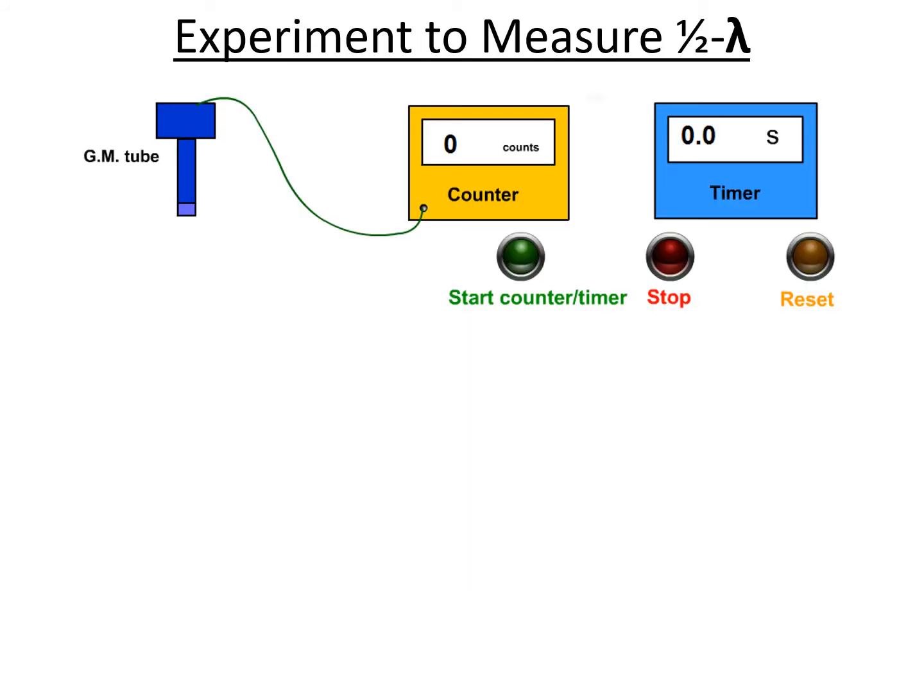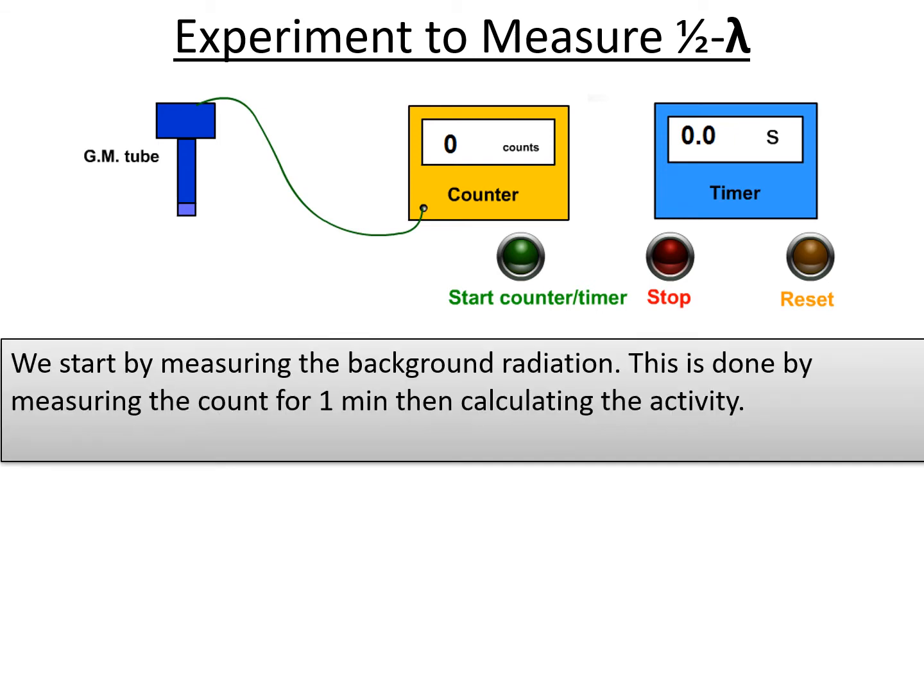Here's the experiment to measure half-life. The setup is fairly simple: we have a GM tube and a counter that measures how many counts there are per second, and a timer to measure how long it takes for each reading. We start by measuring the background radiation—this is really important. This is done by measuring the count for one minute then calculating the activity using A = N/t.